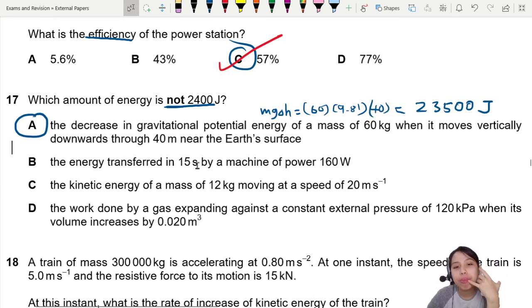But just to be sure, in case, let's also check through B, C, D. Okay, energy transferred by a machine of power 160 watts. So remember, power is energy per unit time. We can rewrite that as energy equals power times time.